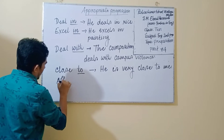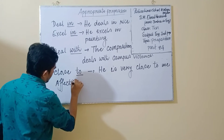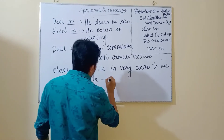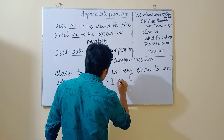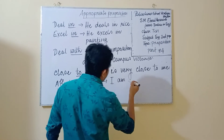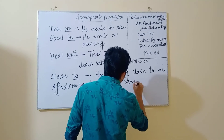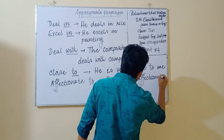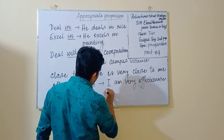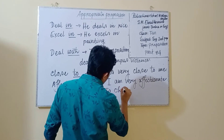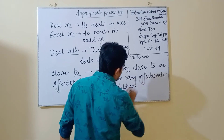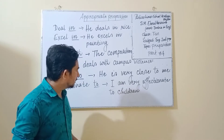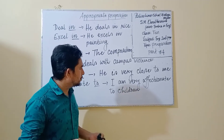The word 'affectionate' is followed by the preposition 'to'. For example: I am very affectionate to children. Affectionate to means to have some affection. So, I am very affectionate to children means I have great affection for children.